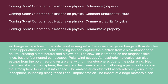Charge exchange escape: ions in the solar wind or magnetosphere can charge exchange with molecules in the upper atmosphere. A fast-moving ion can capture the electron from a slow atmospheric neutral, creating a fast neutral and a slow ion. The slow ion is trapped on the magnetic field lines, but the fast neutral can escape.